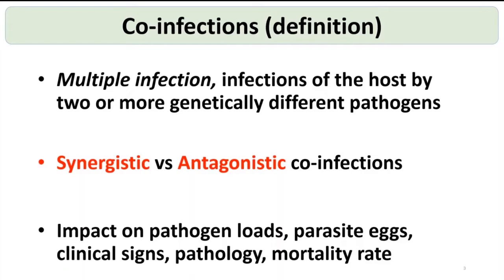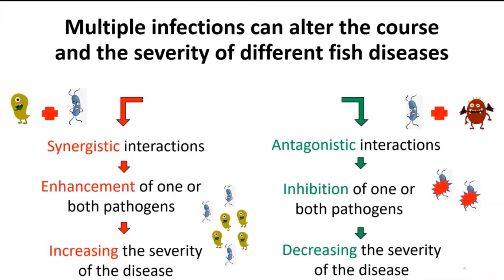Co-infections compete with each other and have a great impact on the pathogen load — parasites and eggs, for example — and may make the clinical signs and severities more difficult for the host, promoting bad pathologies and high mortalities. When you have multiple infections and two pathogens interact synergistically, this ends up in the enhancement of one or both pathogens and an increase in the severity of the disease.